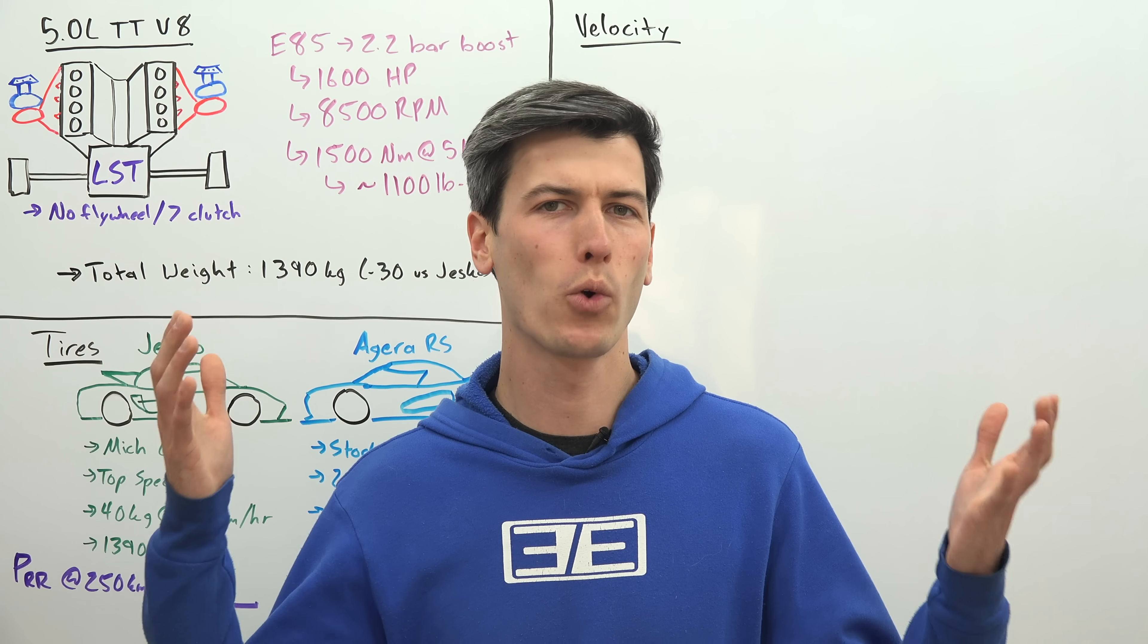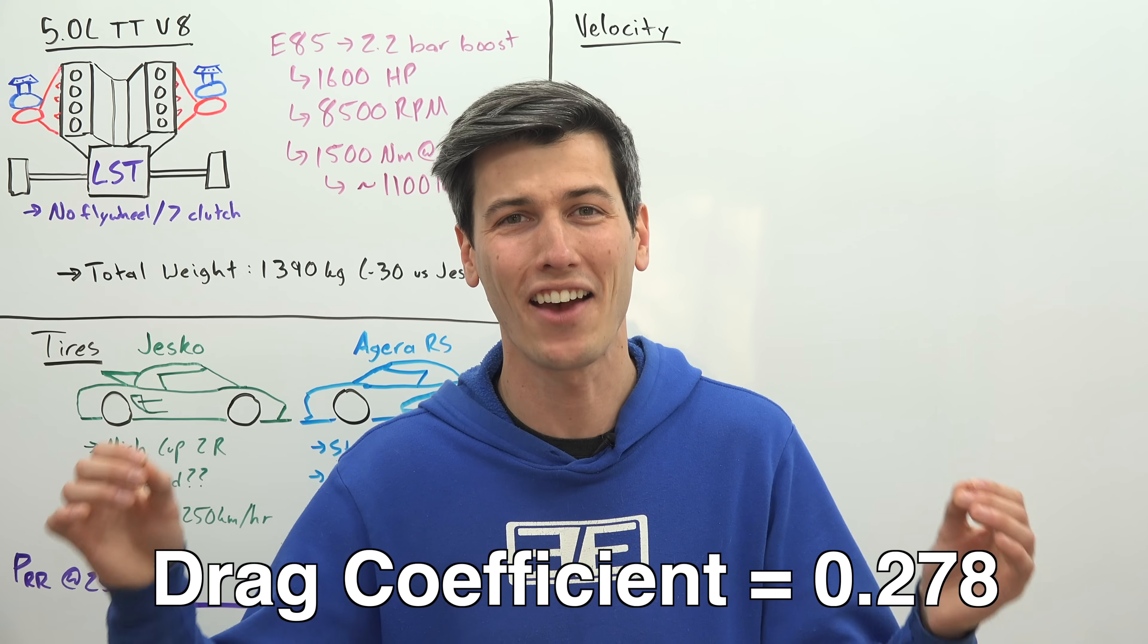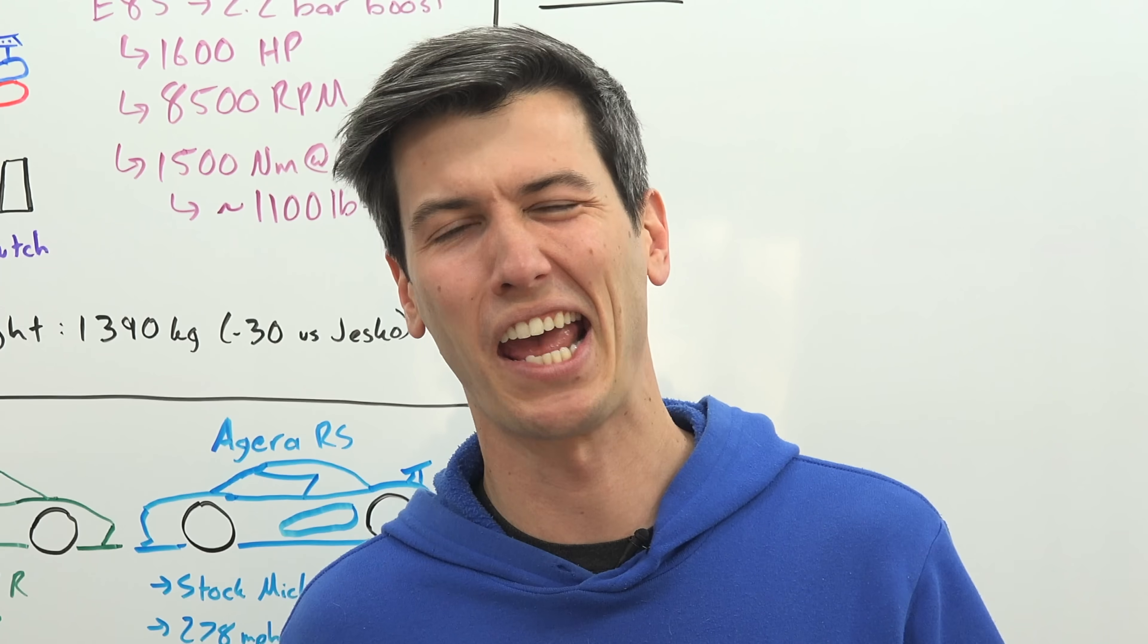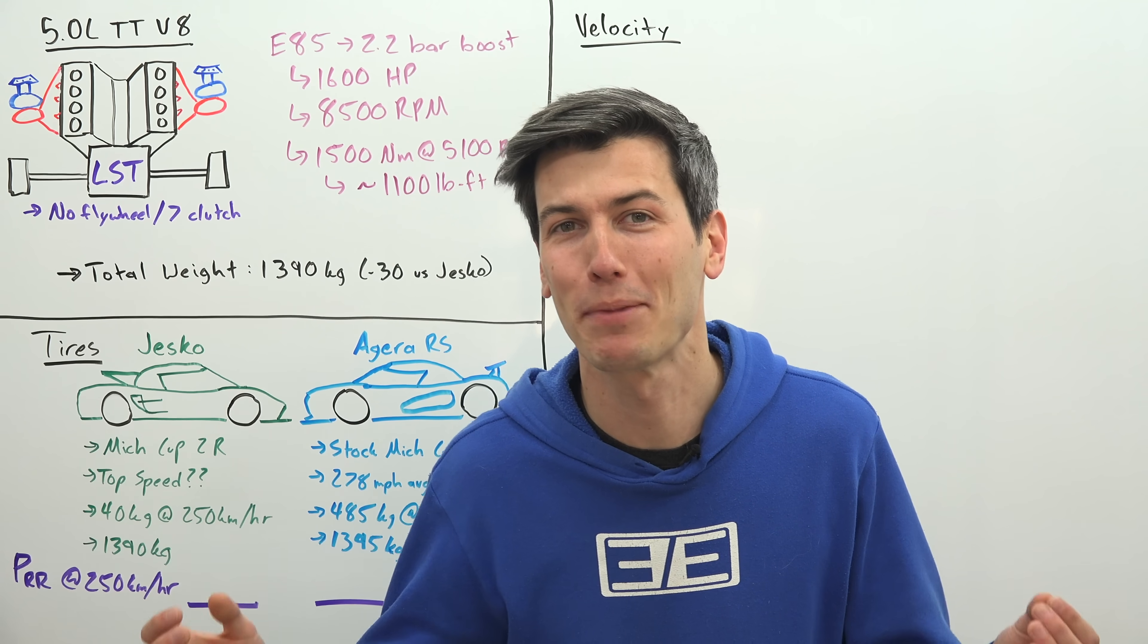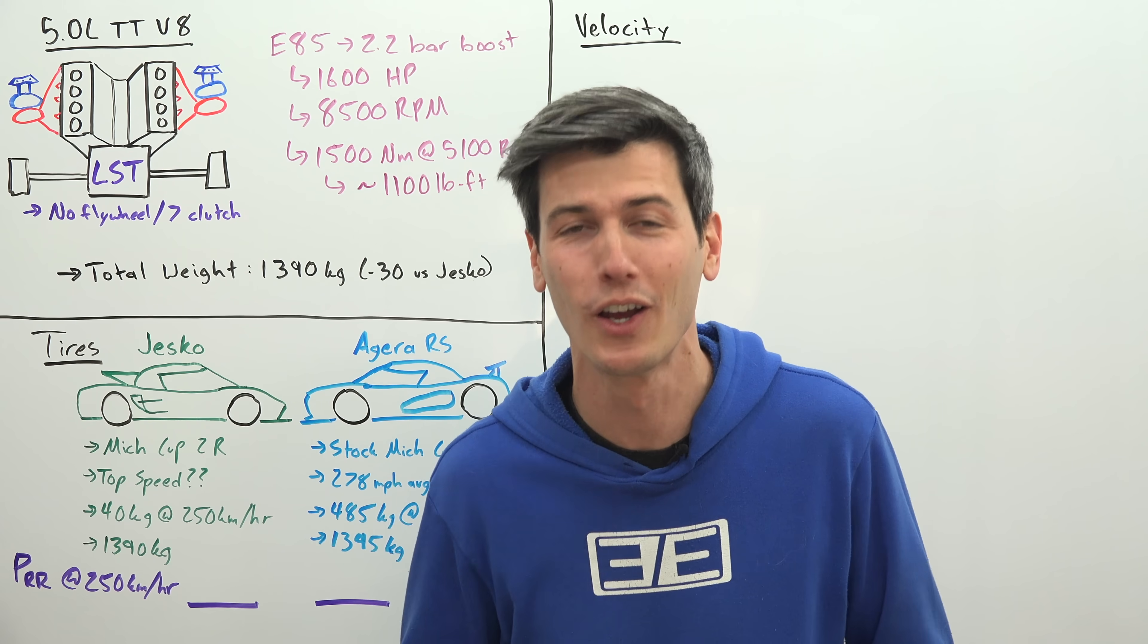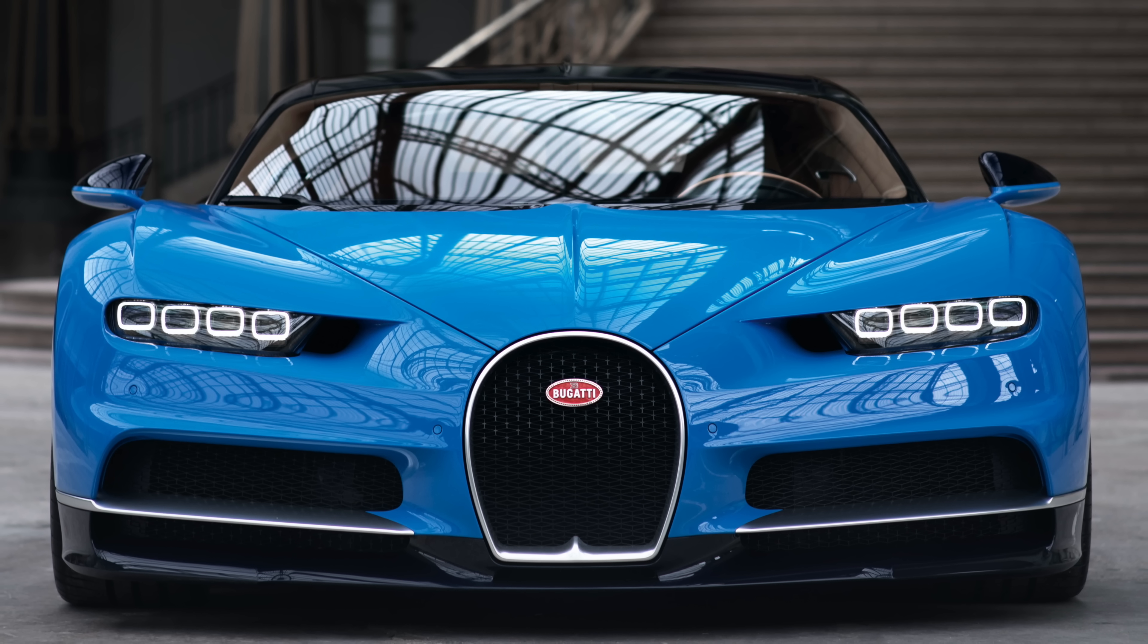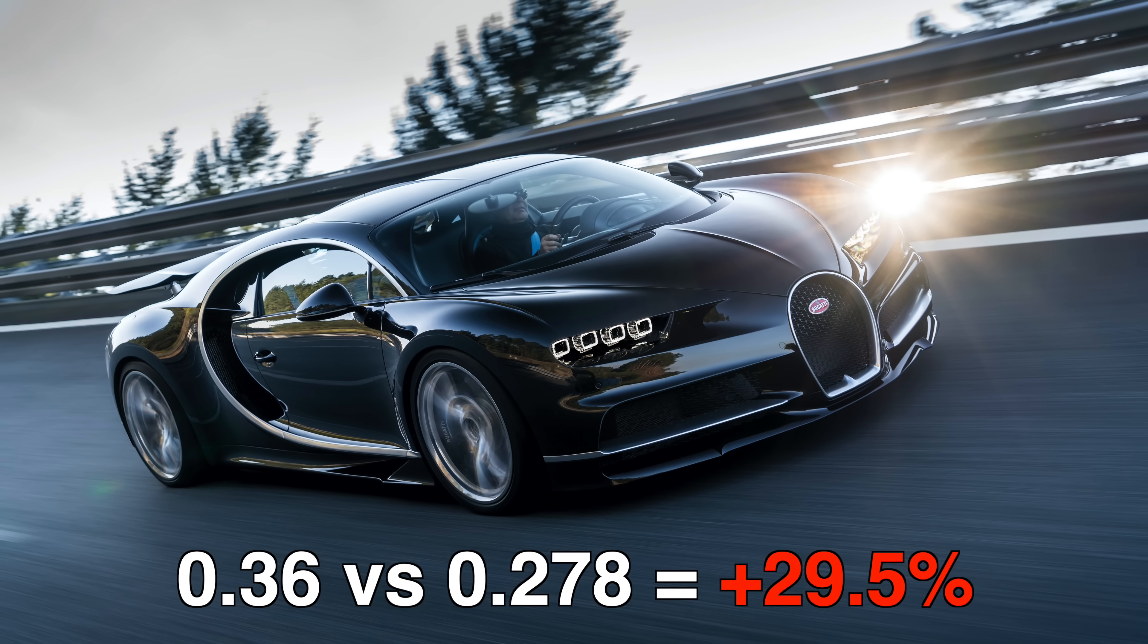So what does that all add up to for drag? A drag coefficient of just 0.278. That is absolutely incredible. Now you might say, nah plenty of cars can do that. Sure, but plenty of cars aren't trying to maintain stability at 300 miles per hour, nor are they trying to cool a 1600 horsepower engine. For comparison, the Bugatti Chiron when in its top speed mode has a drag coefficient of 0.36, almost 30% higher.